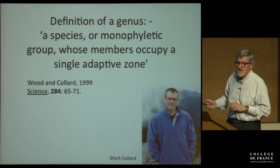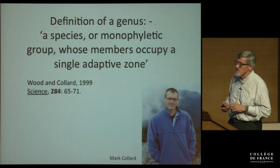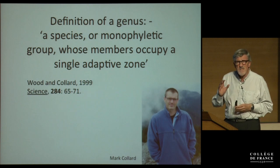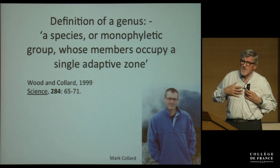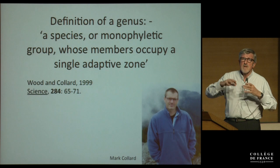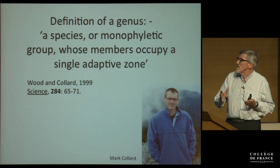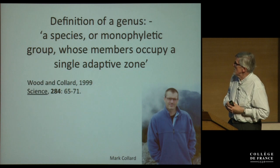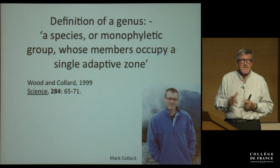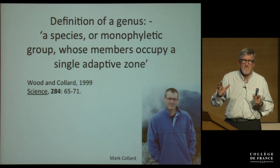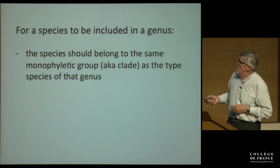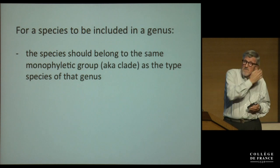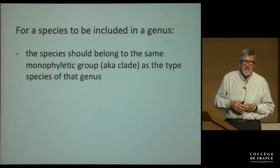This is now a colleague of mine, Mark Collard, and when he was a graduate student we wrote a paper in Science which looked at the origin of the genus Homo. We defined a genus — we didn't invent this, but we looked at various definitions and brought them all together — as a species or more than one species which is called a monophyletic group, whose members all occupy a single adaptive zone. In other words, they make their living in more or less the same way. The first part of the definition is that the species should belong to the same monophyletic group, and the short word for that is clade.